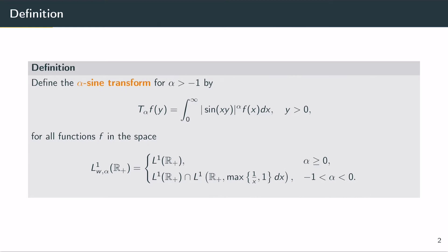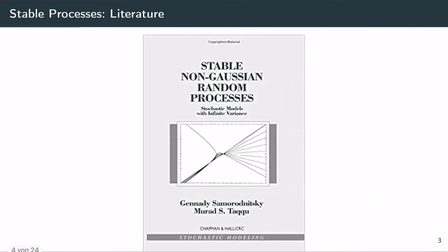As I've mentioned in the title, we're looking at stable processes. An in-depth review on stable processes is given by Samorodnitsky and Taqqu's book Stable Non-Gaussian Random Processes. I will only give a brief introduction to symmetric alpha stable random variables, vectors, random measures, and processes.